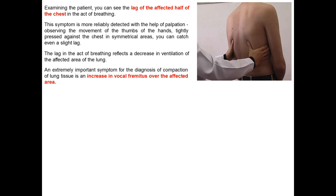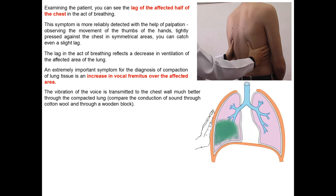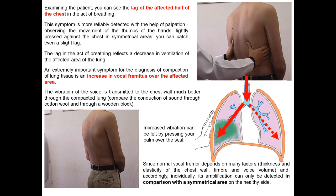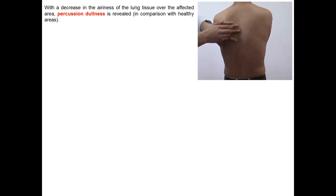An extremely important symptom for the diagnosis of compaction of lung tissue is the increase of vocal fremitus over the affected area. The vibration of voice is transmitted to the chest wall much better through compacted lung — compare the conduction of sound through cotton wool versus through a wooden block. Increased vibration can be felt by pressing your palm over the area of consolidation. Since normal vocal fremitus depends on many individual factors, its amplification can only be detected in comparison with the symmetrical area on the healthy side.